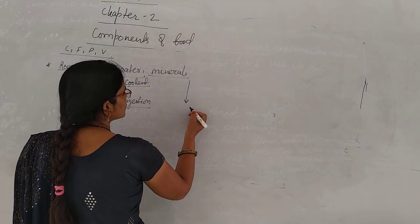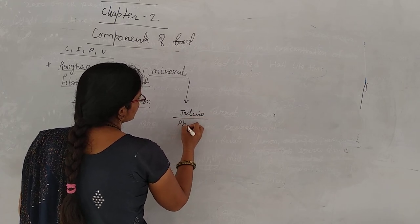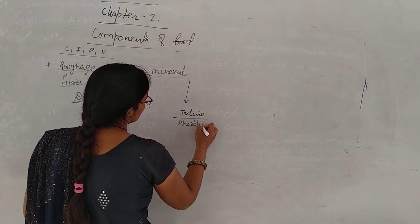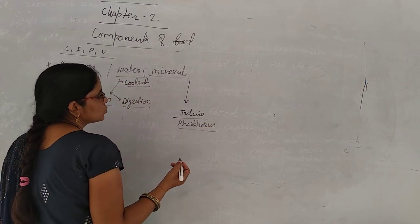Now, minerals. Minerals are chemicals. You will find minerals such as calcium, phosphorus, iodine, and iron. Do you understand?